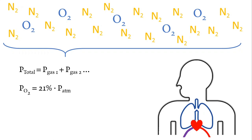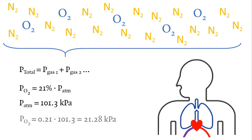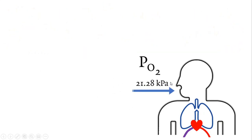We know that oxygen is 21% of the total volume in the atmosphere, and the atmospheric pressure at sea level is 101.3 kilopascal. So the partial pressure of oxygen is equal to 101.3 multiplied by 0.21 — that is, 21% of the total pressure. The partial pressure of oxygen at sea level is 21.3 kilopascal. This is what we breathe.